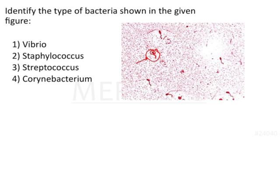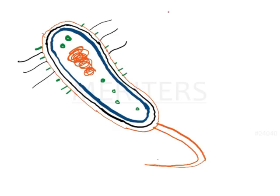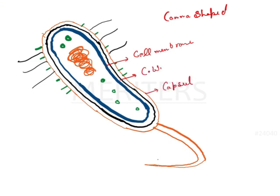If we try to understand the morphological structure of the flagellated bacteria like Vibrio, these are generally comma-shaped bacteria. Here we'll be able to see that they have one cell membrane, then there will be cell wall, and then there will be a capsule as well. These are the ribosomes.